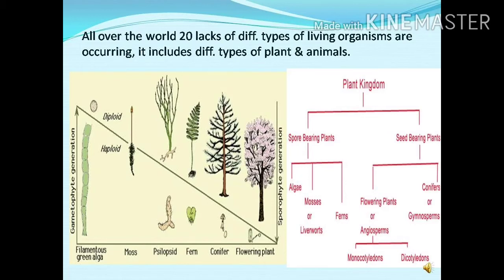Since the origin of plants, we can see how different types of plants originated on the surface of the earth. When the earth was formed, the first form of plant reported was a unicellular alga. Later, this unicellular alga created an environment to develop other plants, and bryophytes evolved. After bryophytes, pteridophytes originated. After pteridophytes, gymnosperms originated. And today, the flowering plants belonging to the group angiosperms are the dominant group of plants on the surface of the earth.